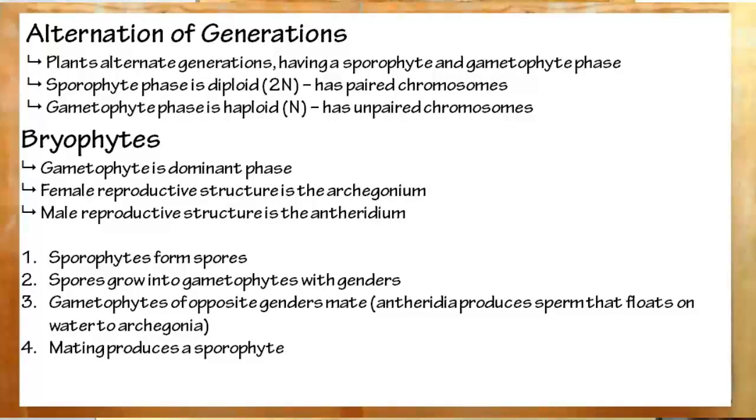In bryophytes, the dominant phase is the gametophyte phase. The males will have antheridia, and the females will have archegonia. Once a female is fertilized, it will produce a sporophyte. This sporophyte then undergoes meiosis, producing haploid spores, which will grow into gametophytes.